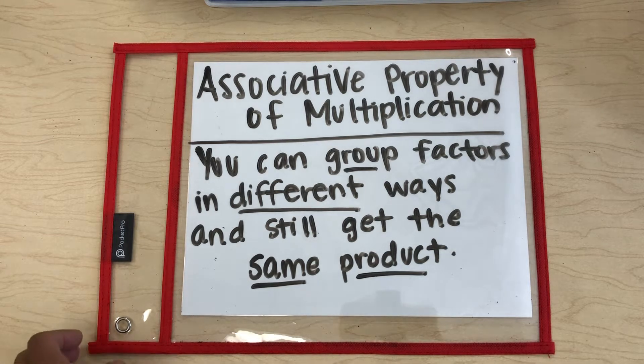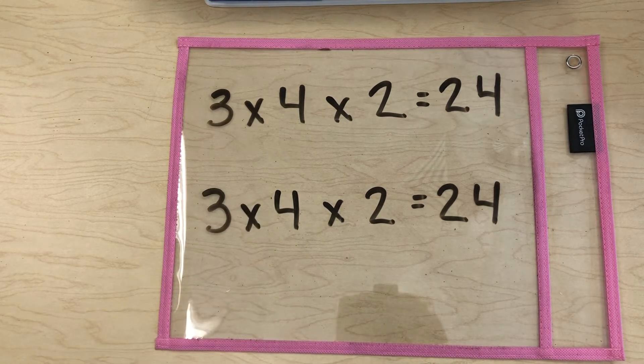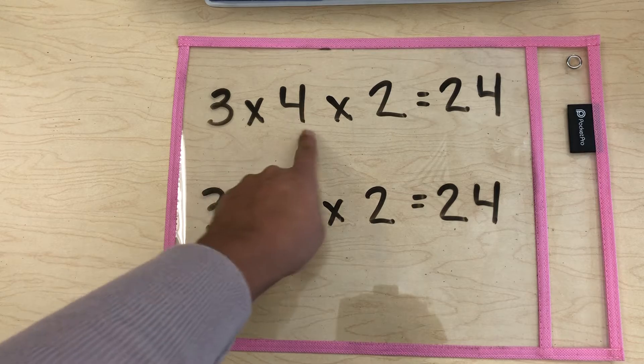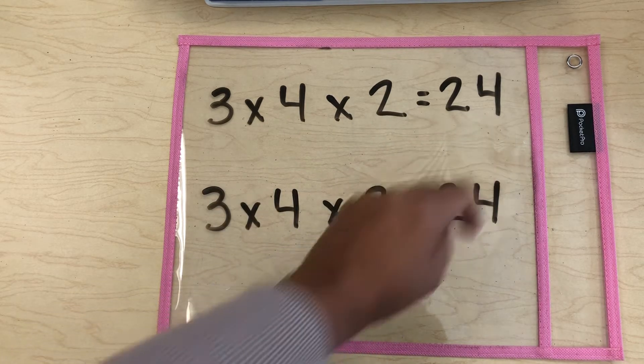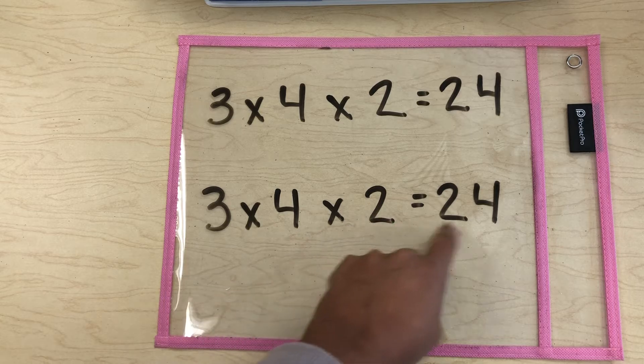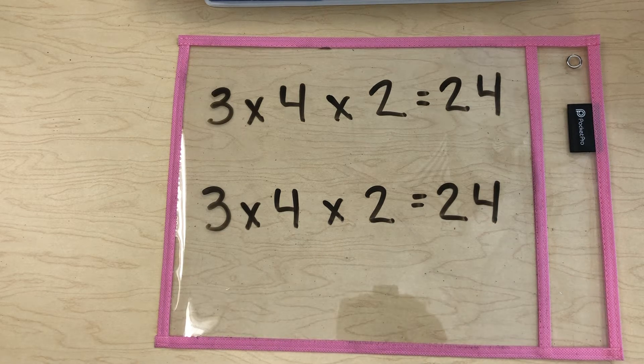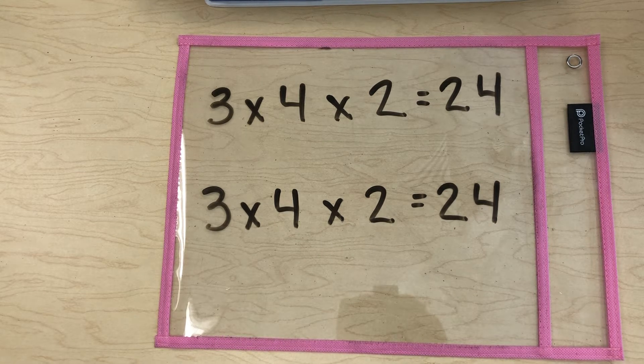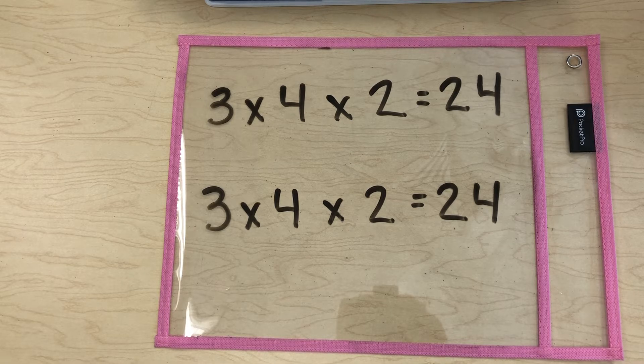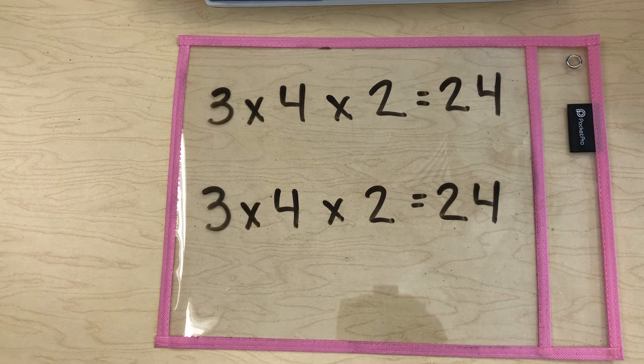Here is our first problem. If you notice, I have the same multiplication problem written twice. So the first one says 3 times 4 times 2 equals 24. And the second one says 3 times 4 times 2 equals 24. So remember in our definition where it said that you can group factors in different ways. Well, if you watched the last video, you learned about these parentheses.